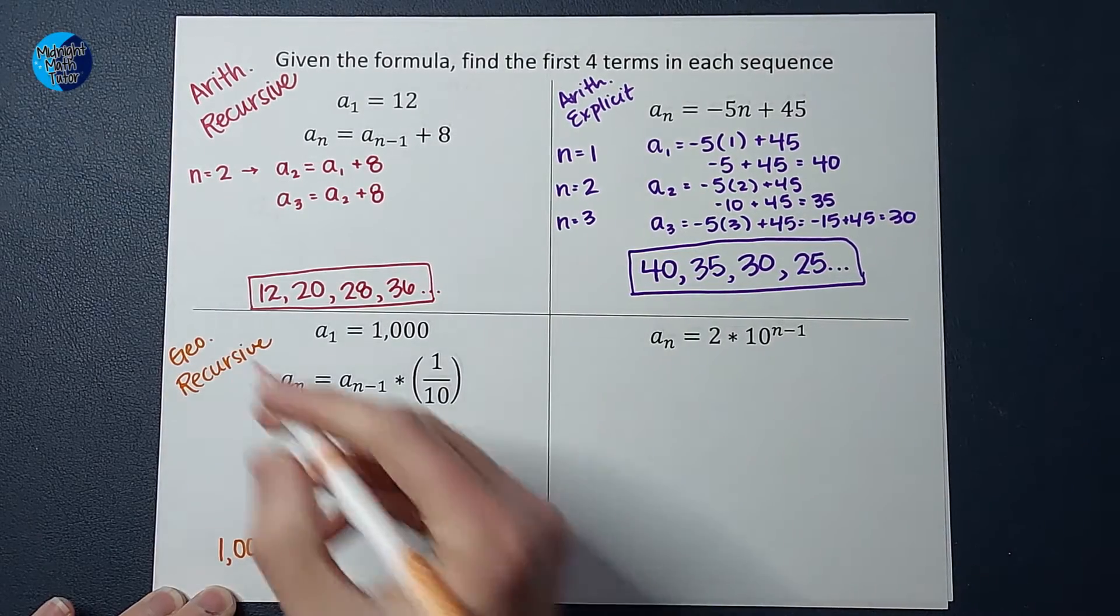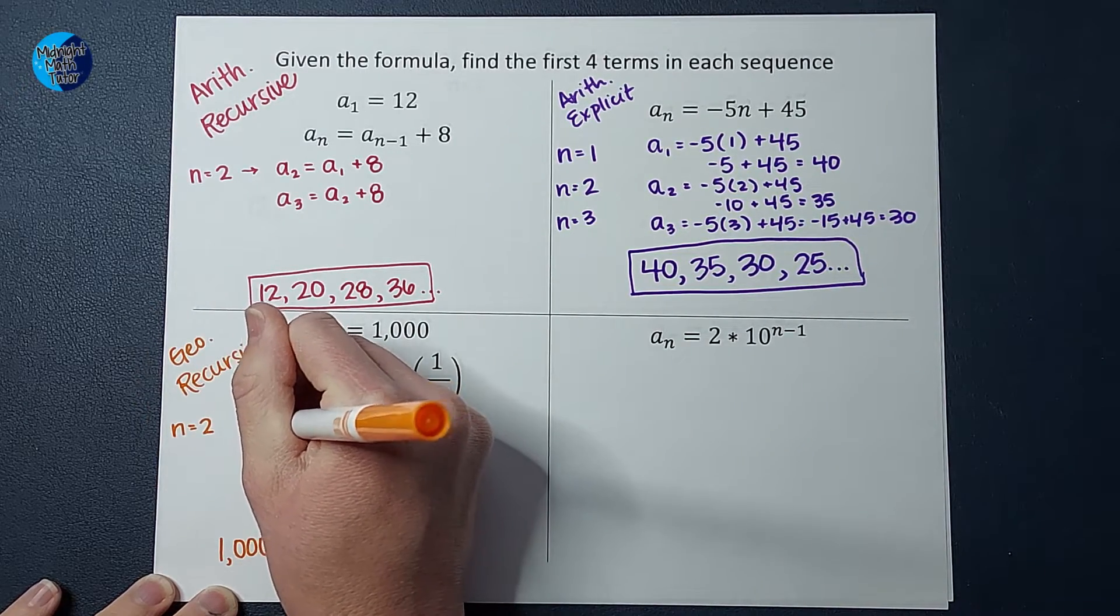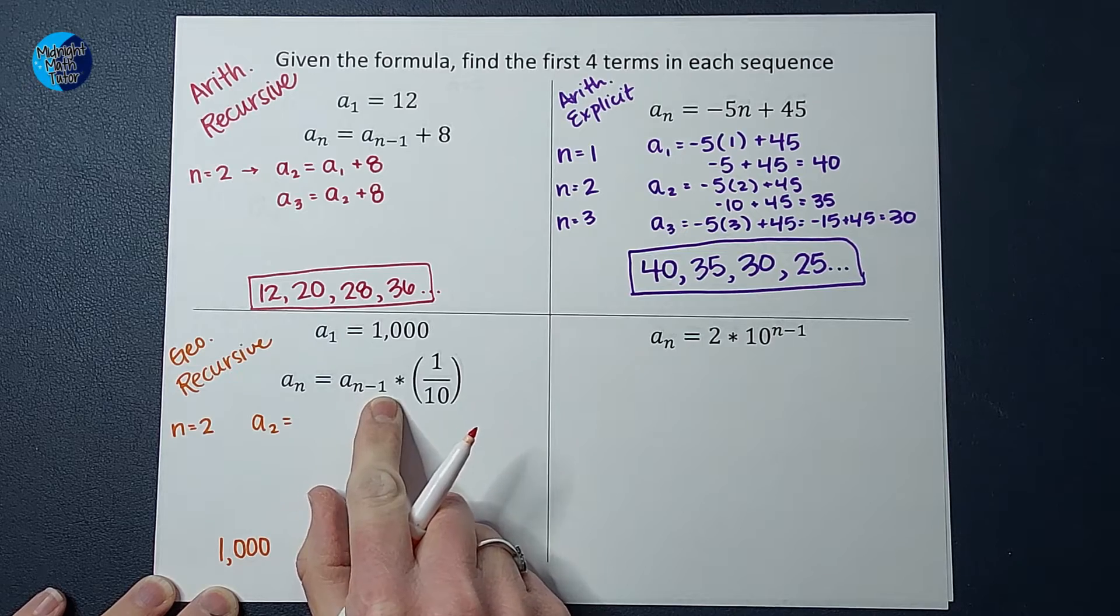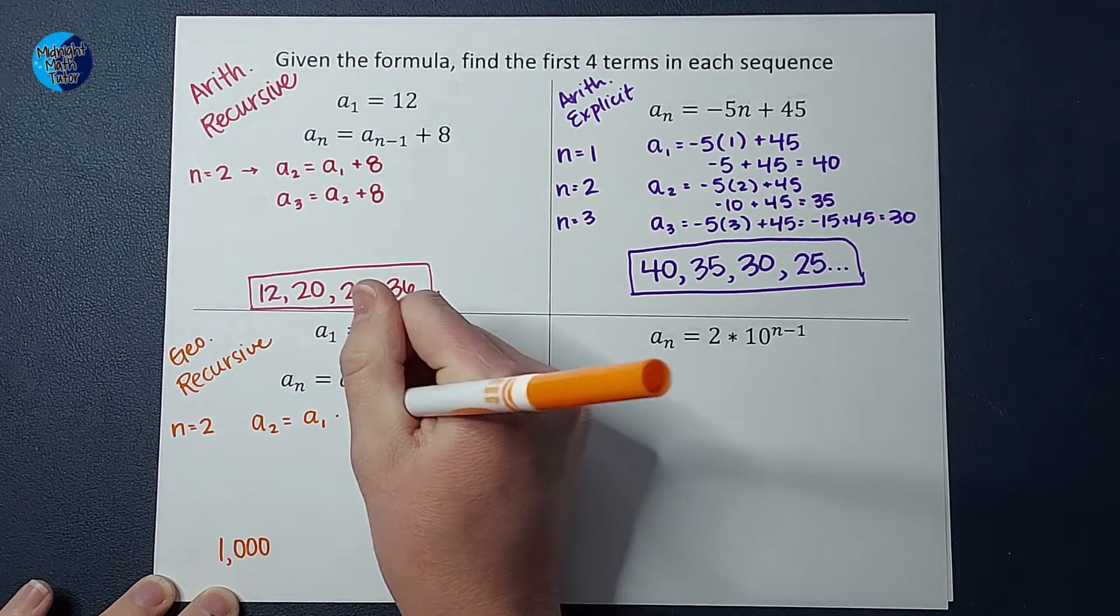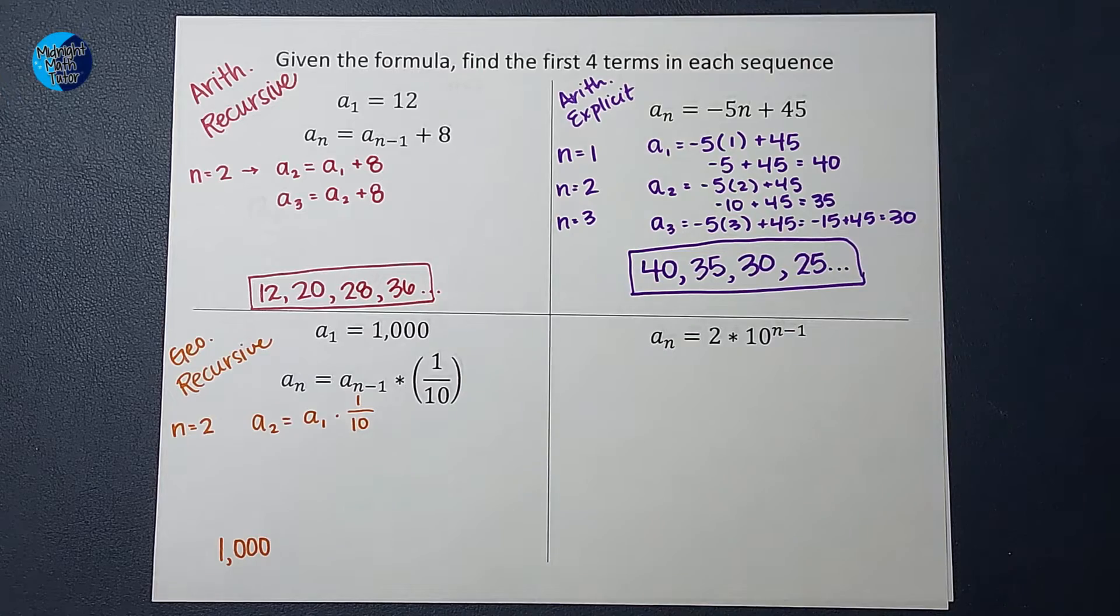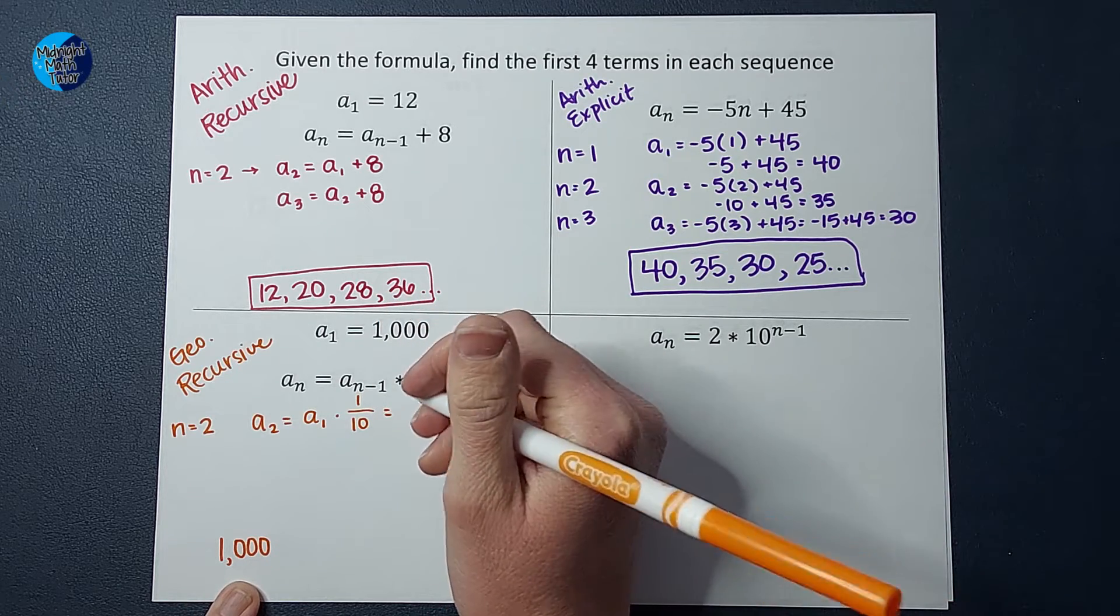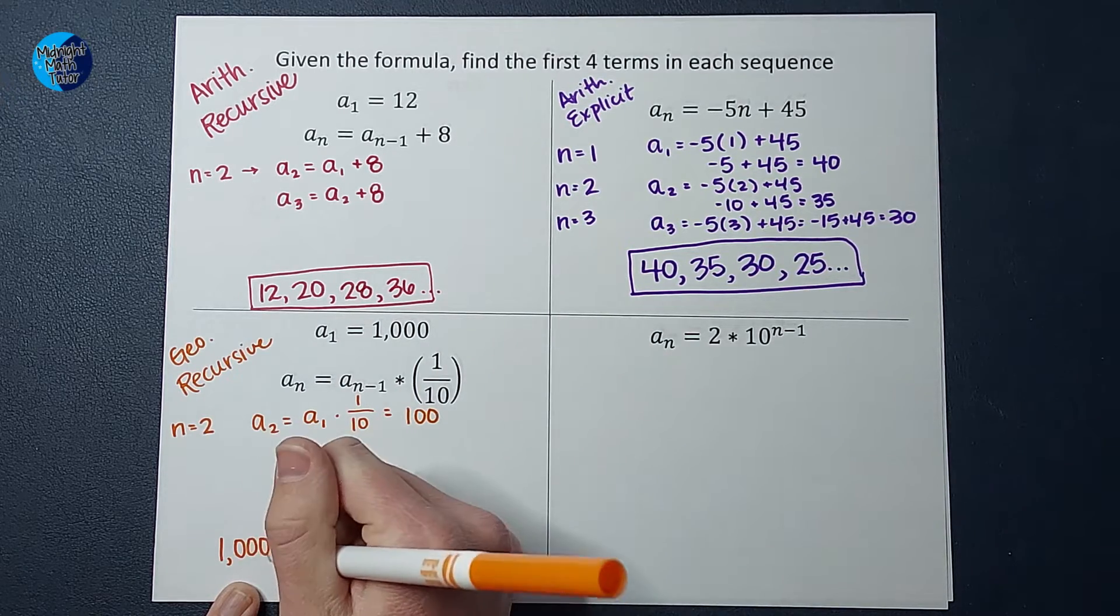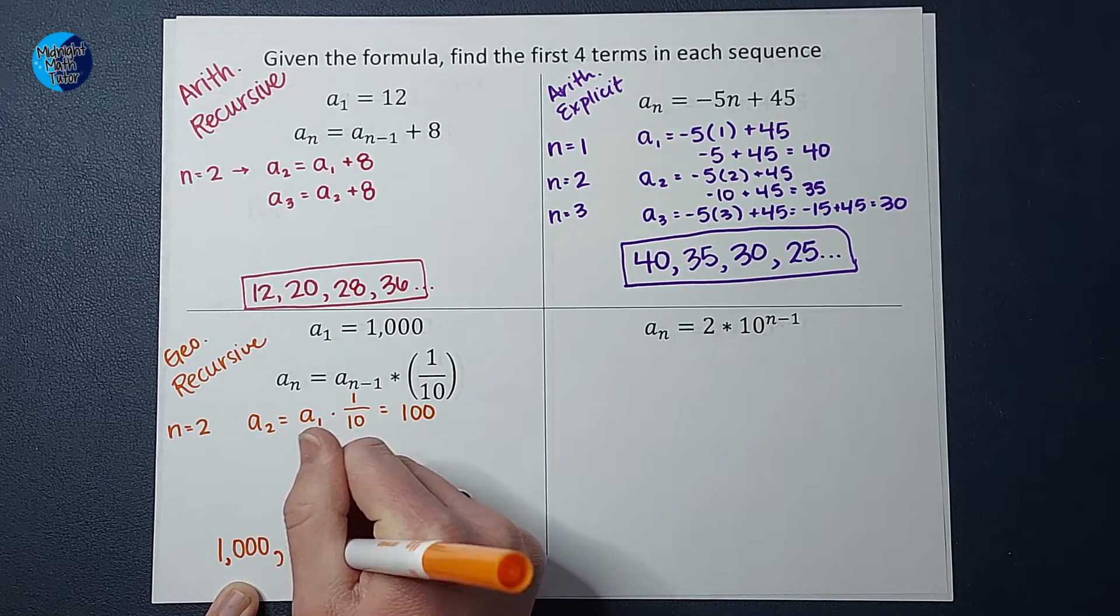Let's figure out what the second term is, which would be n equals 2. So a sub 2 is equal to a sub n minus 1. So 2 minus 1, which would just be 1. So a sub 1, the one before it. And we are going to times by 1 tenth, which is the same as dividing by 10. So basically, we're taking this, dividing it by 10, which gives me 1,000 divided by 10 gives me 100. So a sub 2 equals 100.